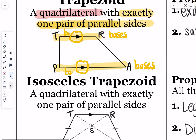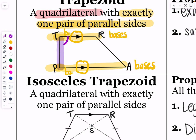Another property of a trapezoid is that the same-side interior angles are supplementary. If these lines are parallel and TP is my transversal, then angle T and angle P are same-side interior angles. Same-side interior angles on parallel lines add up to 180 degrees.